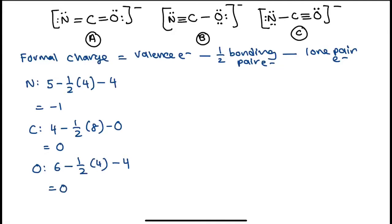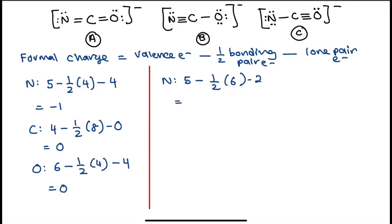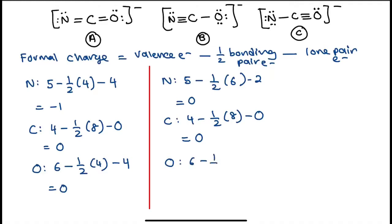For structure B, the formal charge on nitrogen would be 5 − ½(6) − 2 = 0. For carbon, it would be 4 − ½(8) − 0 = 0. For oxygen, it would be 6 − ½(2) − 6 = −1. So the formal charges for structure B are: N = 0, C = 0, O = −1.